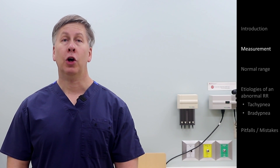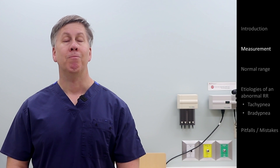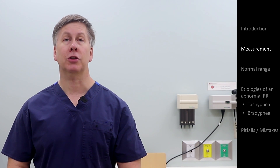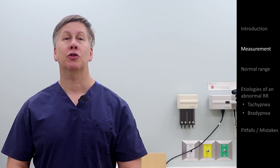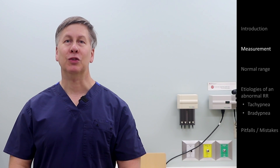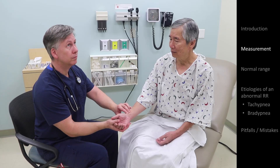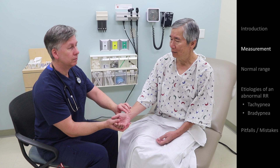One point of caution: if a patient is aware that you're measuring the respiratory rate, they may alter it, even subconsciously. So do not tell them you're measuring it. In practice, what works best is to tell the patient you're measuring the pulse, and once you've actually done that, continue to leave your finger on the patient's radial artery, while unbeknownst to them, you then subtly switch to counting respirations.